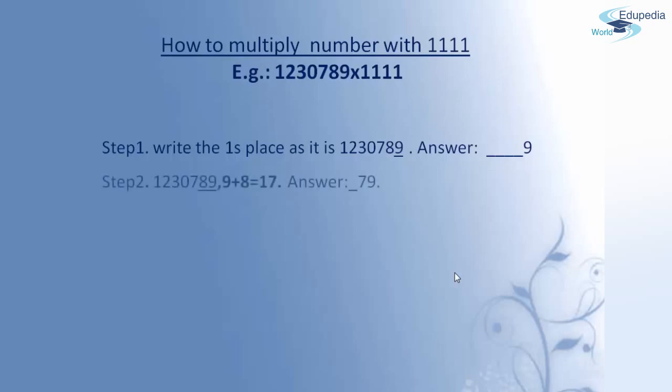Moving to step number 2, I have to add the digits that are in ones place and tens place. By adding 9 plus 8, I will get the sum 17. Since 17 is a two-digit number, we take 7 and write it in the answer, and the digit left over in the tens place, that is 1, should be taken as carry. So in the answer, we now have the digits 7 and 9.